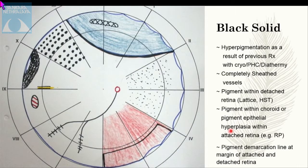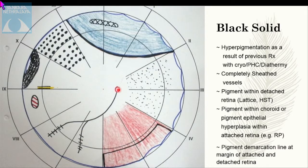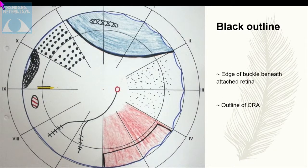Black solid is used for hyperpigmentation resulting from previous treatment — either cryo, laser, or diathermy — as well as sheathed vessels, pigment within detached retina, pigment within the choroid or pigment epithelial hyperplasia with attached retina, and demarcation lines in spontaneously attached retina. Black outline is used to document the edge of buckle beneath attached retina and the outline of a chorioretinal atrophy (CRA).